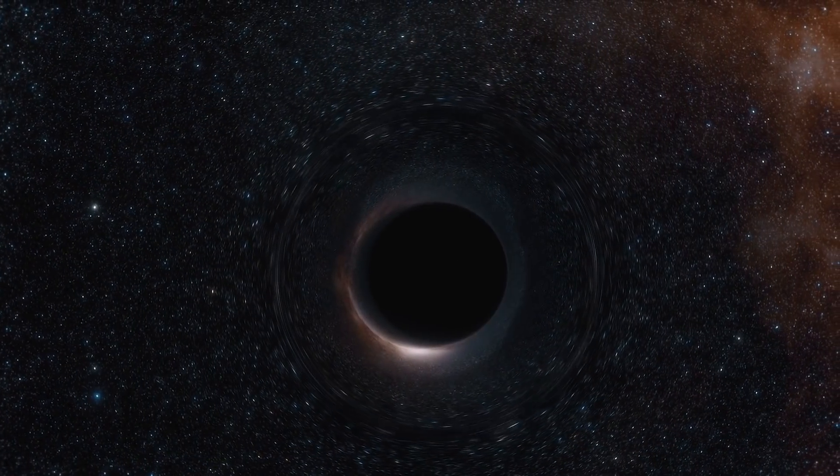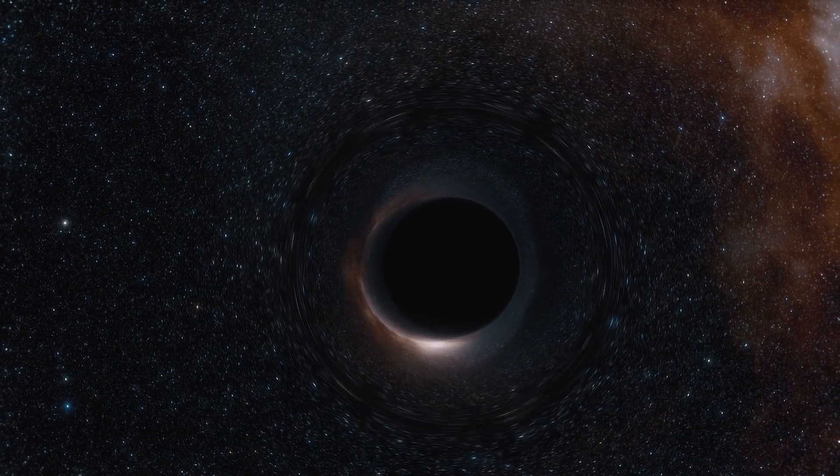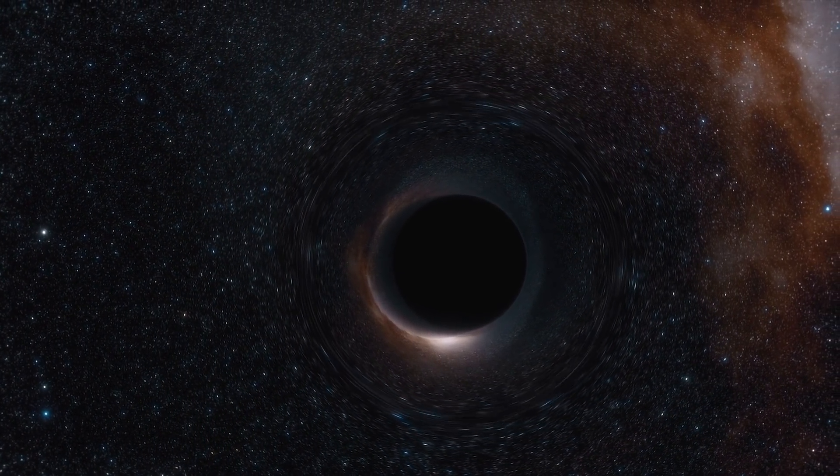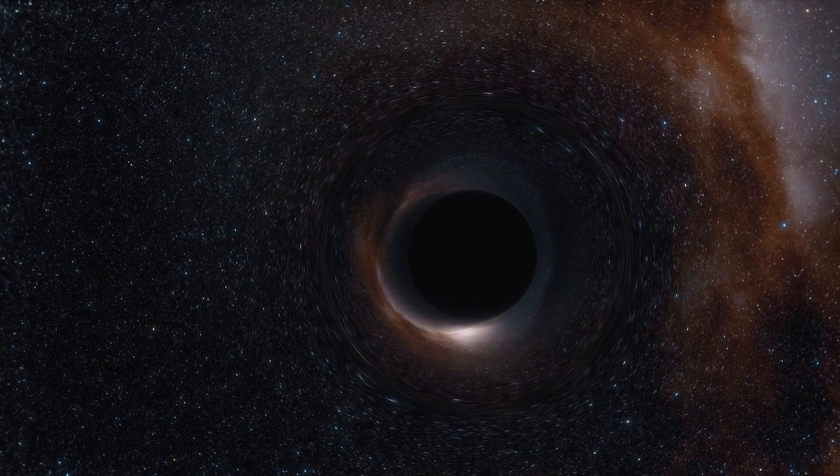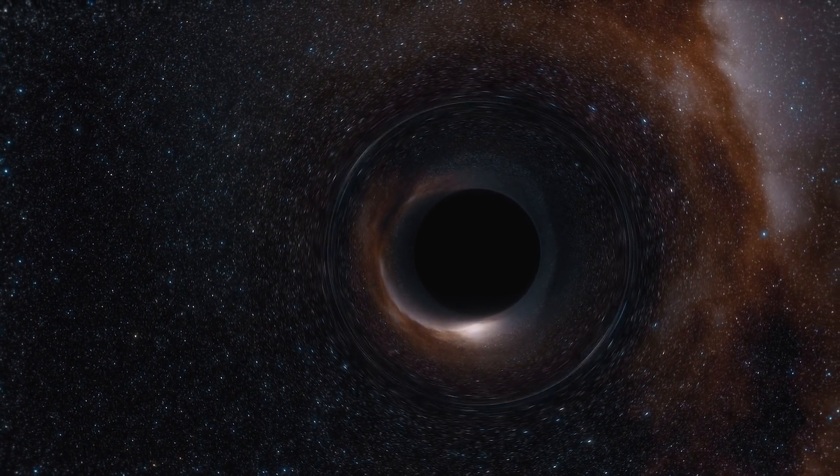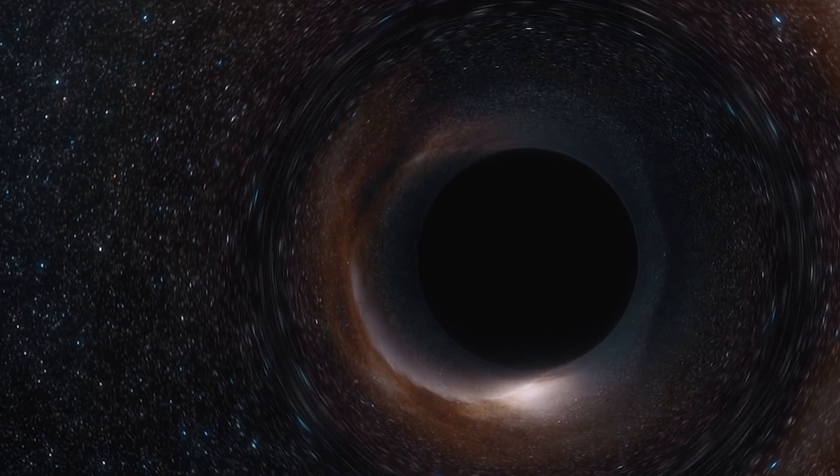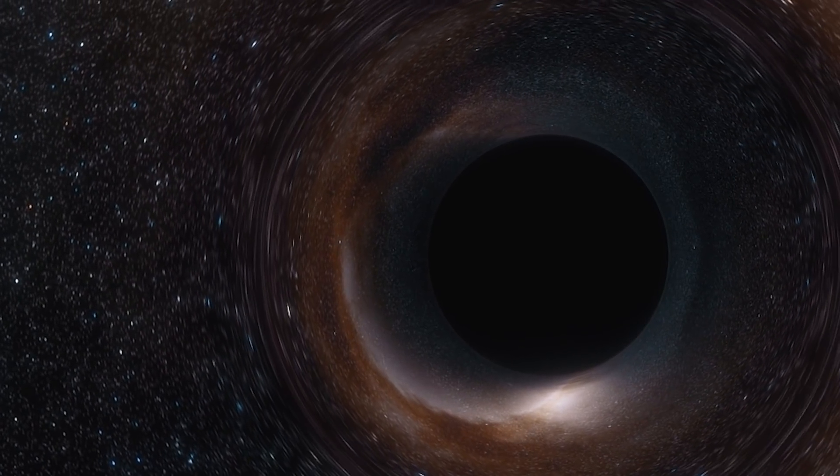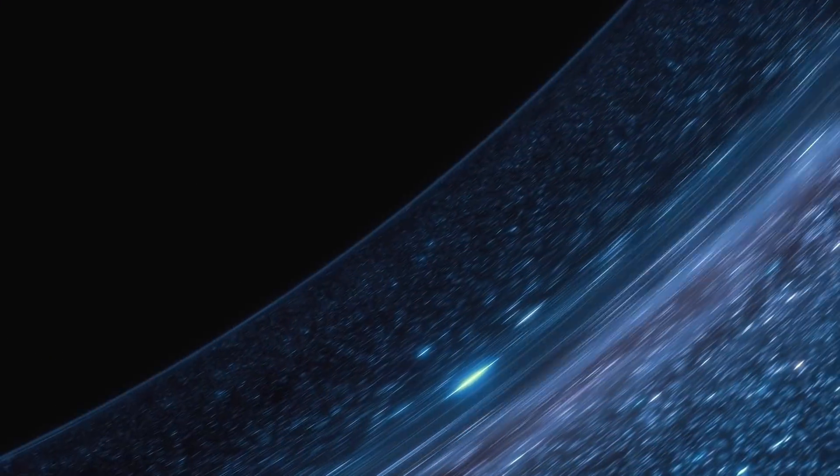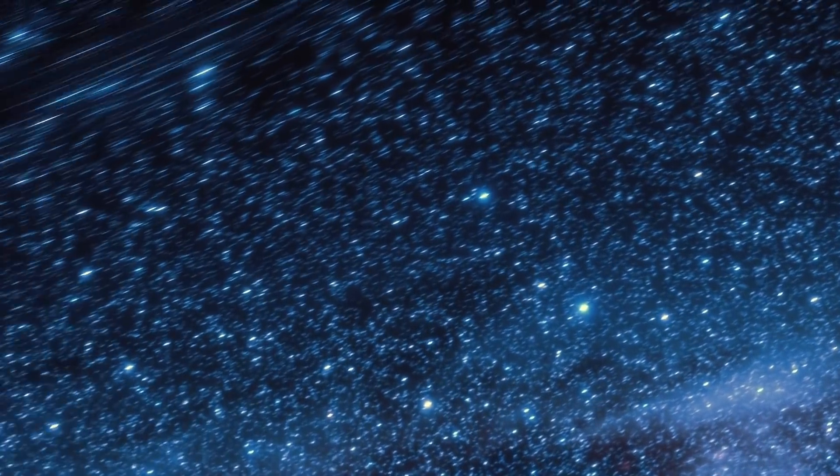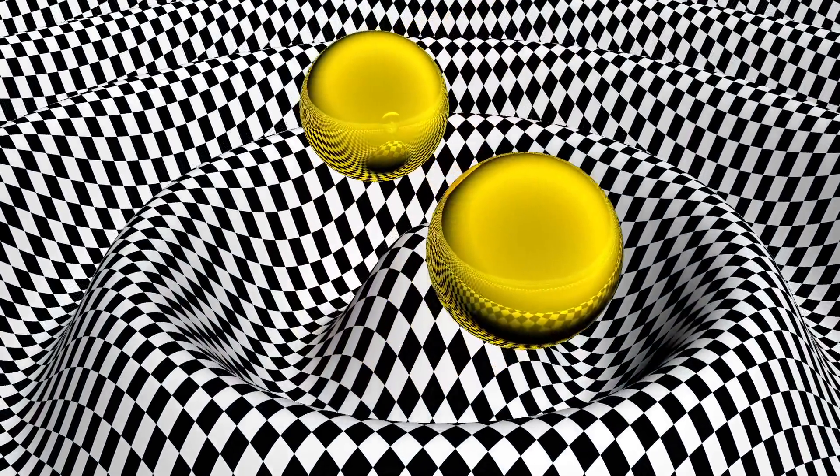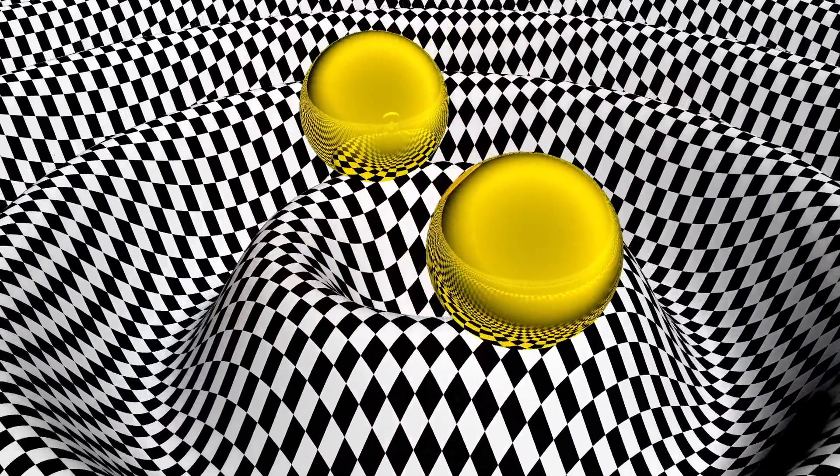The holographic principle resolves the black hole information paradox within the framework of string theory. However, there exist classical solutions to the Einstein equations that allow values of the entropy larger than those allowed by an area law, hence in principle larger than those of a black hole. These are so-called Wheeler's bags of gold. The existence of such solutions conflicts with the holographic interpretation and their effects in quantum theory of gravity, including the holographic principle, are not fully understood yet.